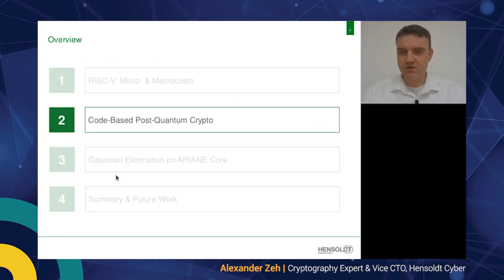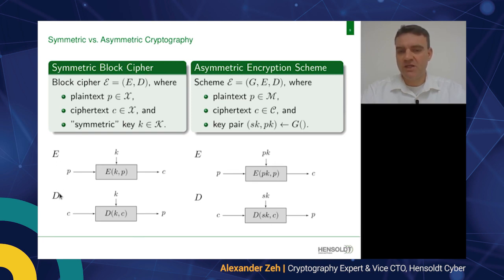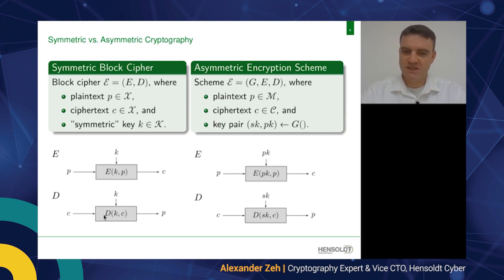This leads me to code-based post-quantum crypto. Let me shortly outline the difference between symmetric and asymmetric cryptography. In symmetric cryptography, encryption and decryption work with the same secret key k. The encryption function takes plaintext p, uses the key, and outputs ciphertext c. The decryption function uses ciphertext c and the same key k and outputs plaintext p.